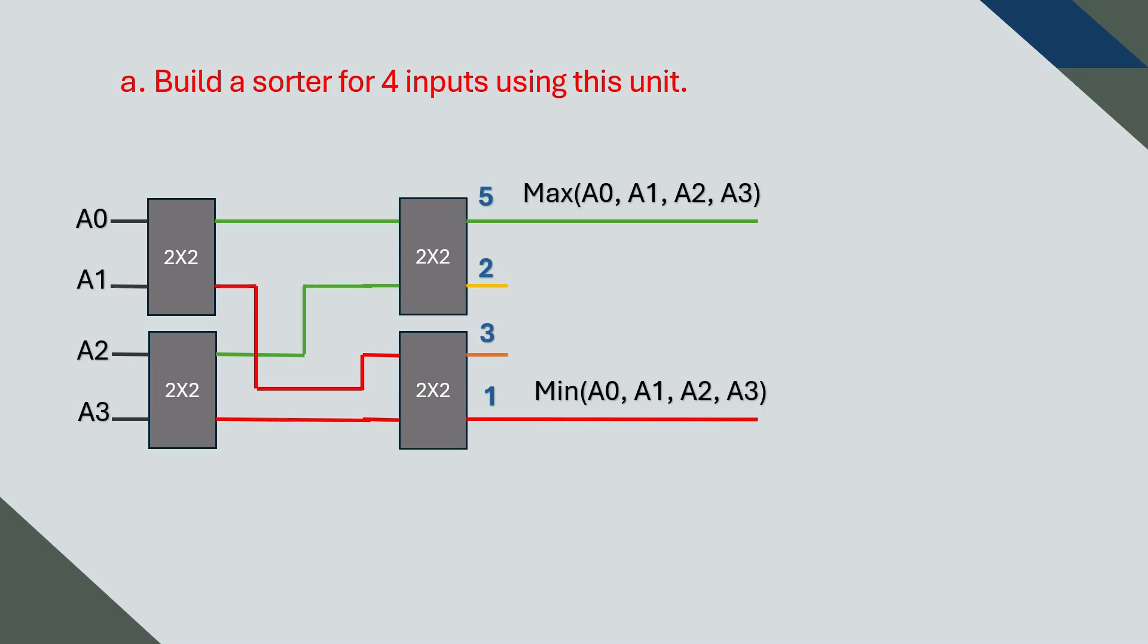To fix that, we add one more two-on-two sorting unit between the two middle values. Now we have completed a fully functional four-on-four sorting network. It correctly sorts all four values using just two-on-two sorters.